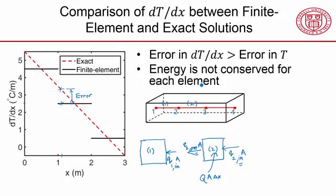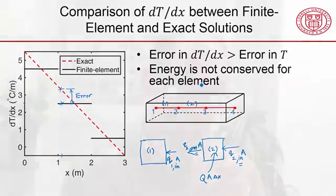It's also not conserved for each infinitesimal element, because if that were the case, the differential equation would be satisfied exactly, and we saw that our finite element shape satisfies the differential equation poorly. But it turns out that energy is conserved in aggregate. We'll take a look at that next.